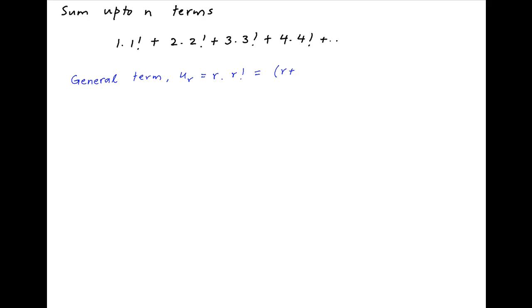This can be written as (r+1-1) times r factorial, which equals (r+1) times r factorial minus r factorial. This is equal to (r+1) factorial minus r factorial.